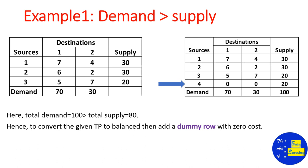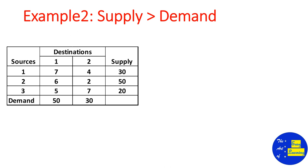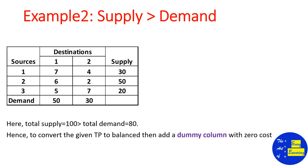Case 2: if supply is greater than demand, we add a dummy column with zero cost. For example, with sources 1, 2, 3 and destinations 1 and 2, if total supply is 100 and total demand is 80, the supply exceeds demand by 20. We add a third dummy destination column with zero cost and requirement 20, converting it to a balanced transportation problem.